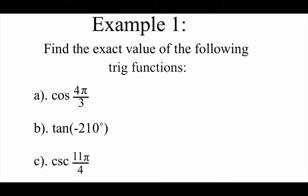Here's what we're looking at for our first few examples. We're going to be finding the trig values at these specific angles. For part A, we're going to look at the cosine of 4π over 3. Now we're going to find a reference angle to help us out so that we don't always have to rely on our unit circle. If we look at this 4π over 3 angle,